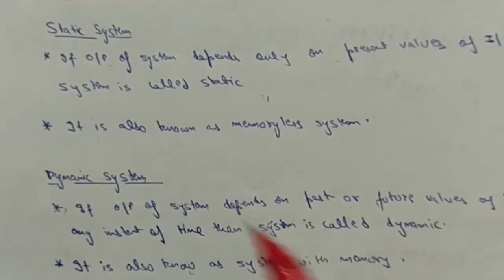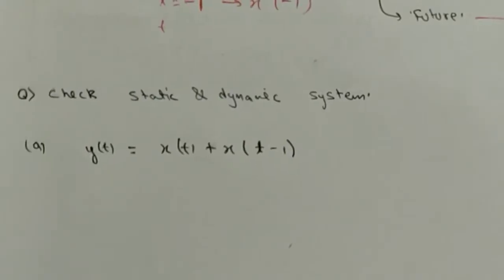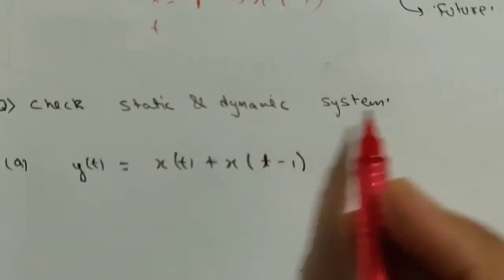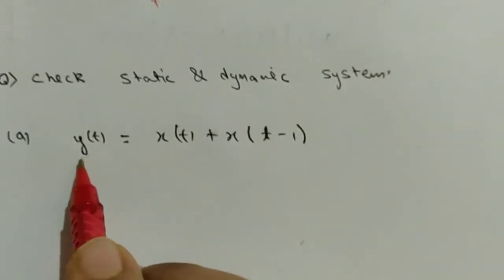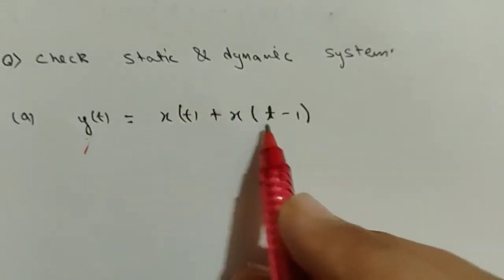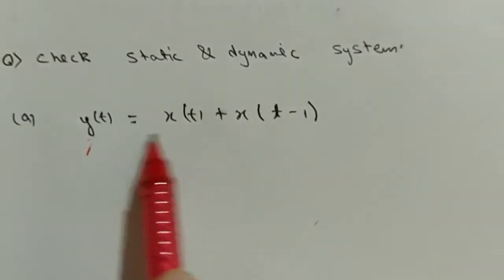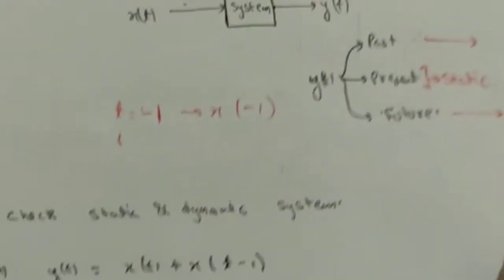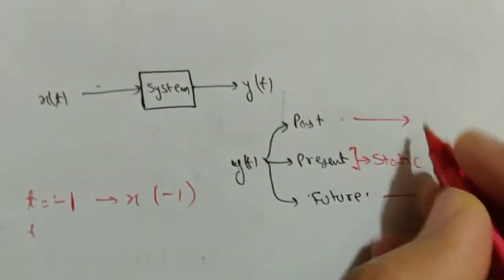Now let's look at some examples. Question: check whether the system is static or dynamic. Given y(t) = x(t) + x(t-1). Before identifying the system, I'll explain how to determine dependency type.